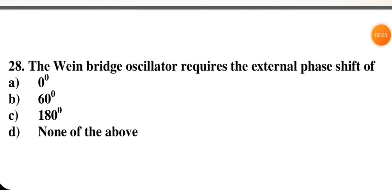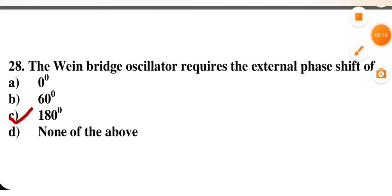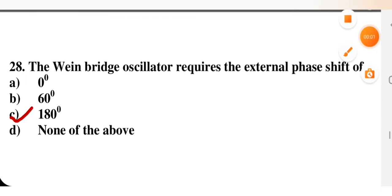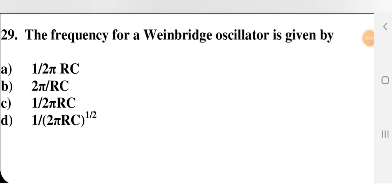The Wien bridge oscillator requires an external phase shift of — 0 degrees, 60 degrees, 180 degrees, or none of the above? It requires a 180-degree external phase shift, so option C is correct.